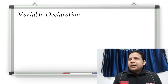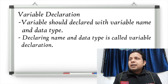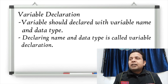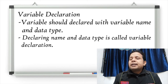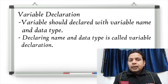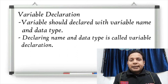Now I'll explain variable declaration. Variables should be declared with a variable name and a data type. The data type can be integer, single precision, or double precision, assigned by symbols like dollar ($), percent (%), stroke (/), ampersand (&), and exclamation mark (!). Declaring a name and a data type together is called variable declaration — both the name and the data type are necessary.